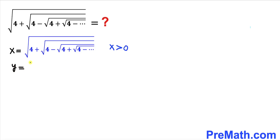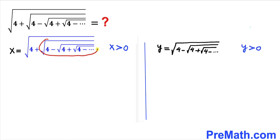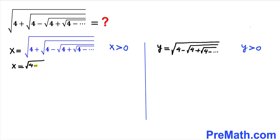Let's focus on this inner part. I'm going to label it y, so y is equal to the square root of 4 minus the square root of 4 plus the square root of 4 minus, and it goes on. This whole thing is a positive value, so y is greater than zero. Since this part equals y, the equation becomes x equals the square root of 4 plus y.